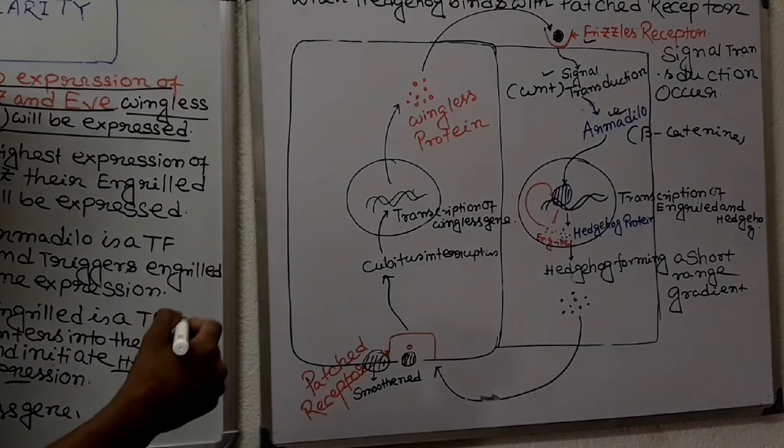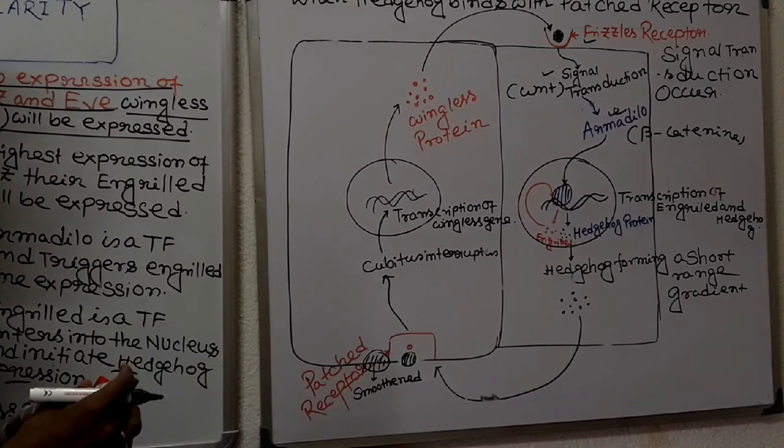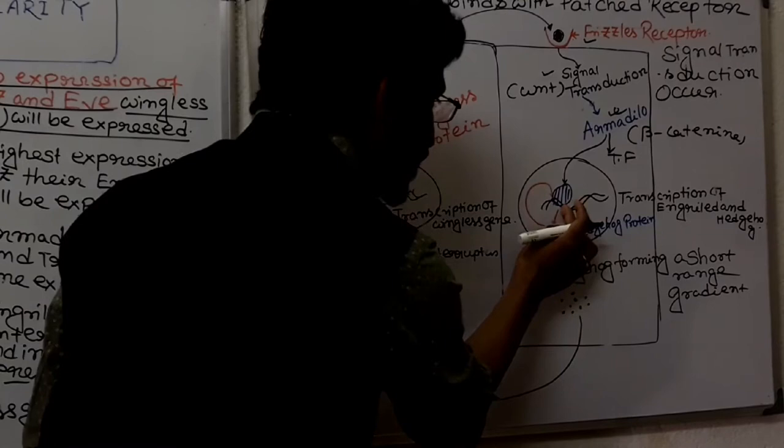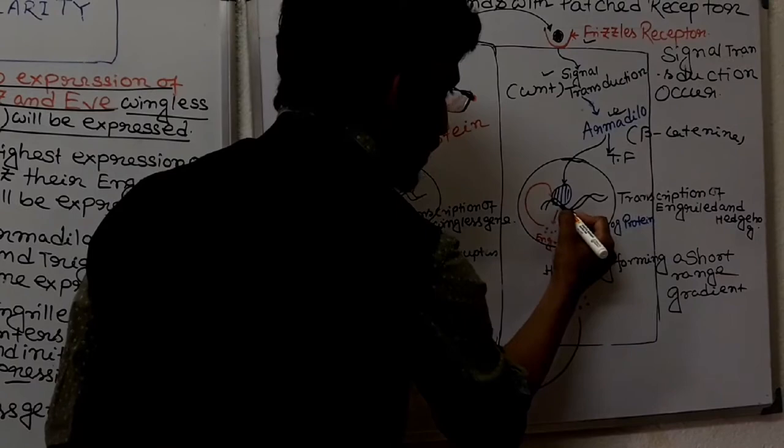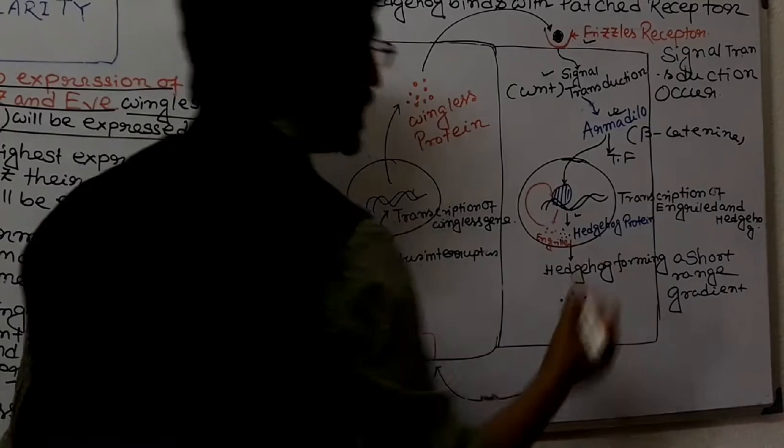Armadillo is a transcription factor. It goes into the nucleus — you can see the nucleus in the diagram — and once it enters the nucleus, it binds and acts as a transcription factor, initiating hedgehog and engrailed gene expression.